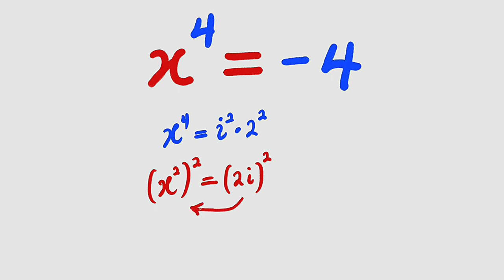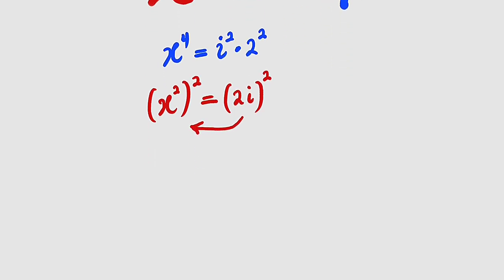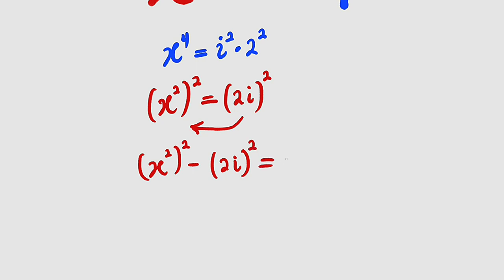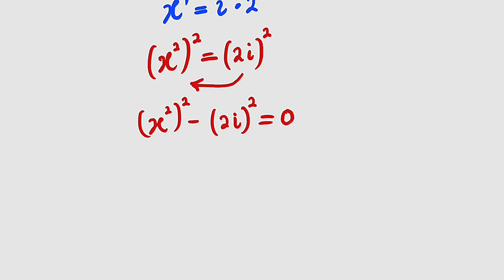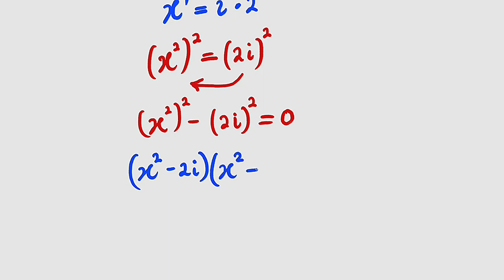Now let me bring this term to the left hand side. We have x squared all to the power of 2 minus 2i raised to the power of 2, and this is equal to 0. This is now a difference of two squares that can be factorized: you take the base without exponent, that is x squared, then you subtract 2i. Then you multiply — you take x squared again, and this time you add 2i.